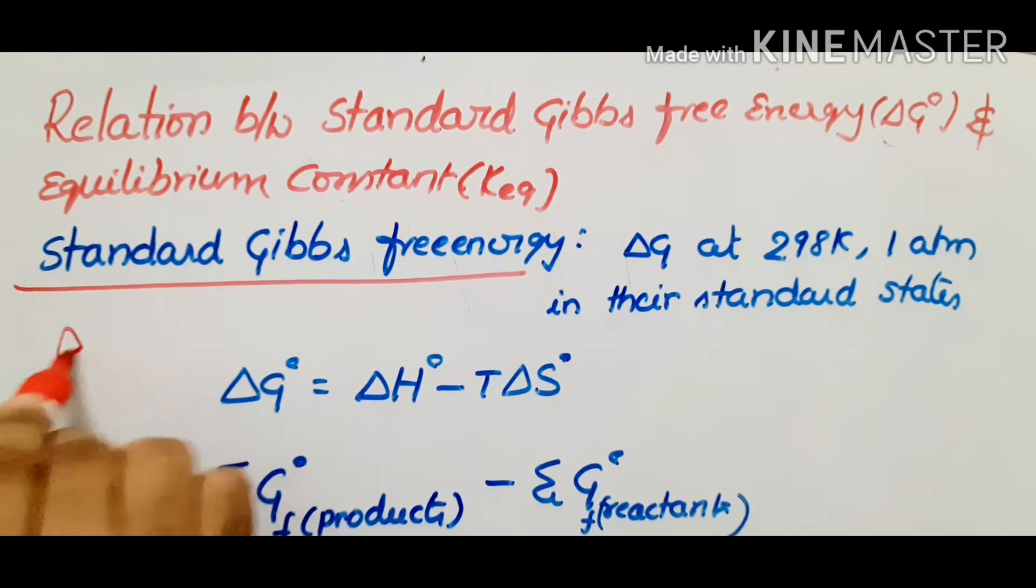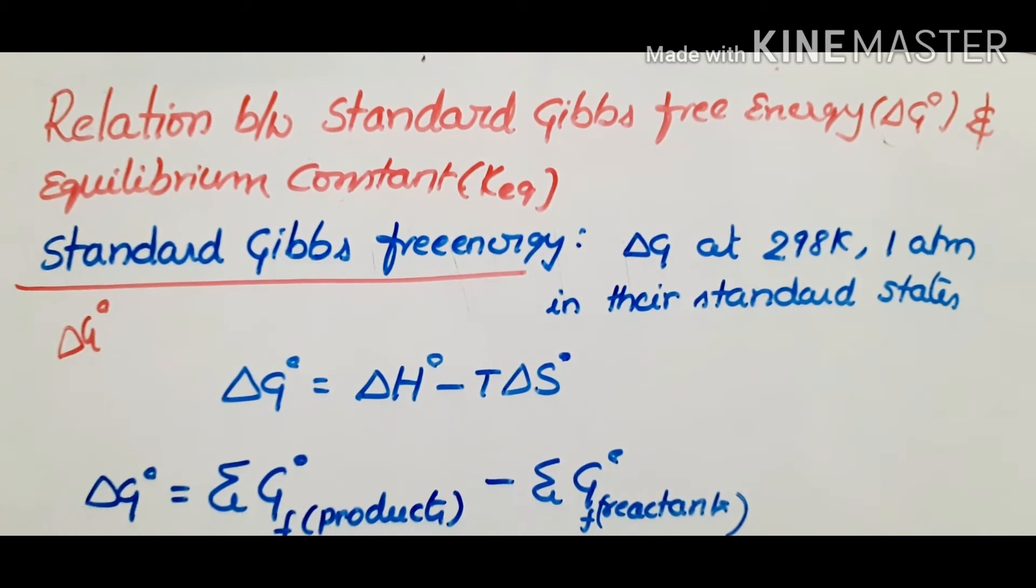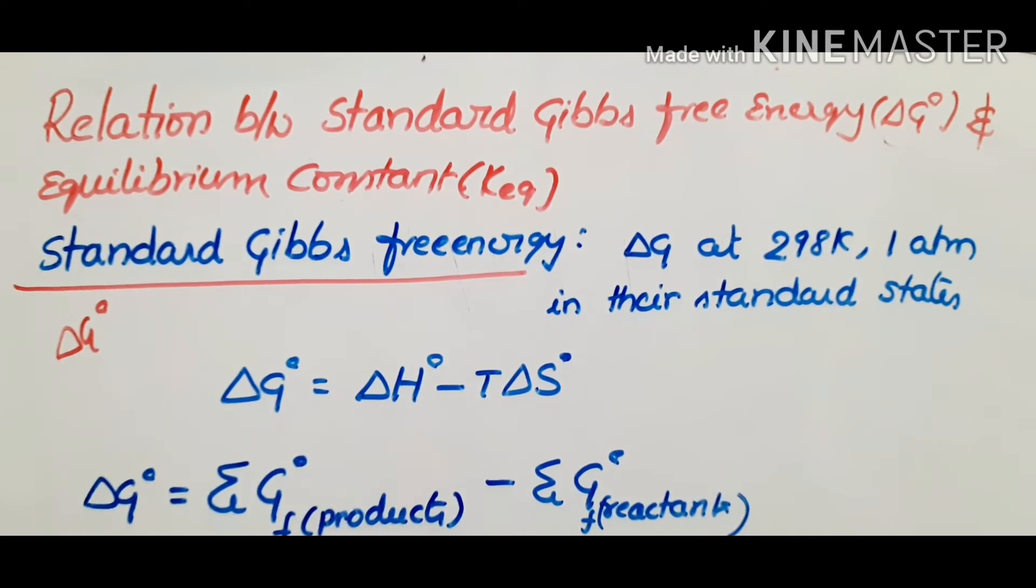This is delta G naught. I will tell you a definition of this, delta H naught, standard enthalpy of formation, standard enthalpy, standard entropy. We will discuss this in previous videos. Simply say that here, 298K and 1 atmosphere pressure, reactants are at their standard states, converted into products in their standard states. These two also relate to this: delta G naught equal to delta H naught minus T delta S naught. We will discuss this. Now, I will tell you a problem.